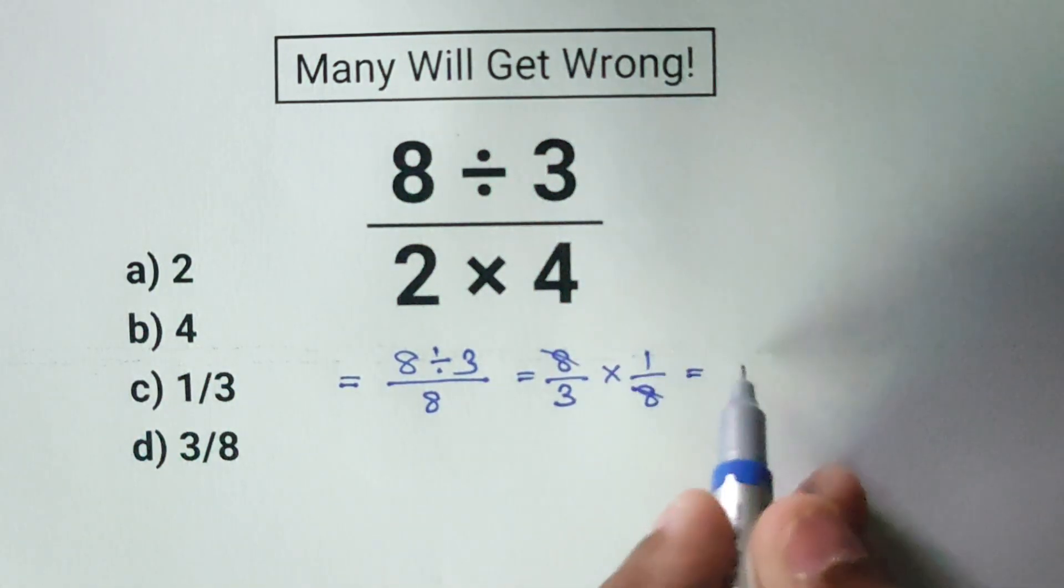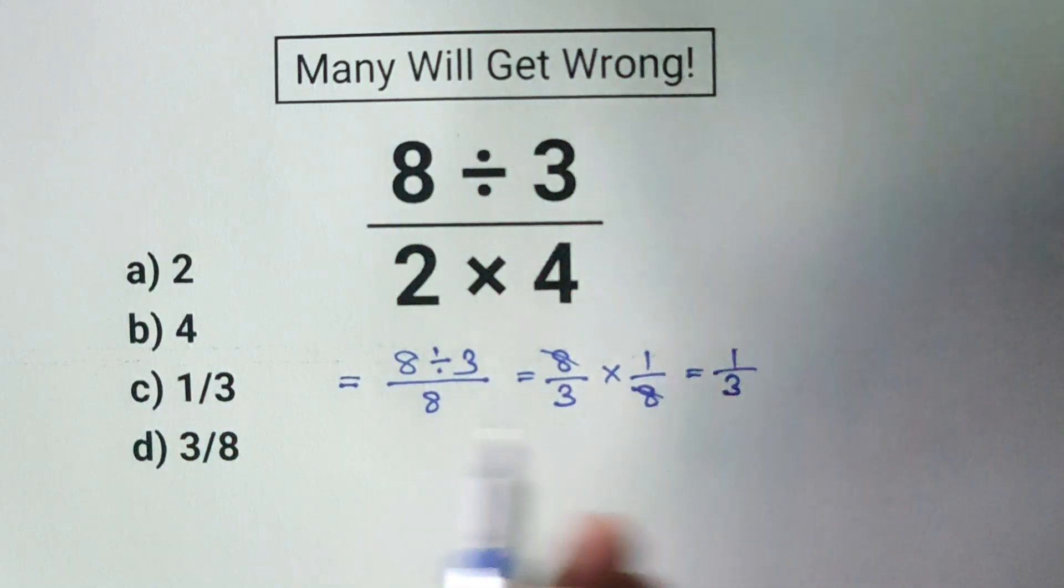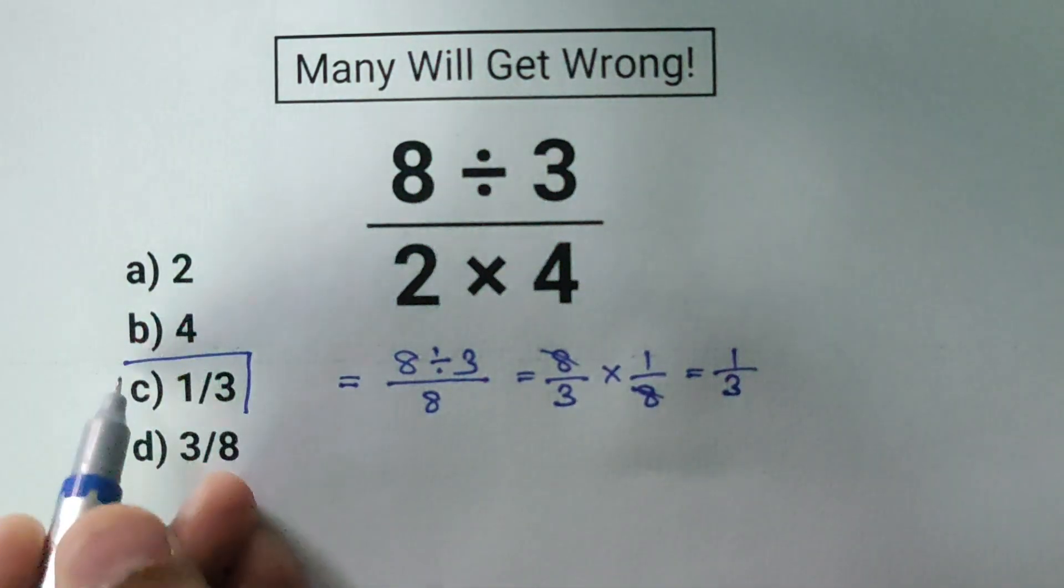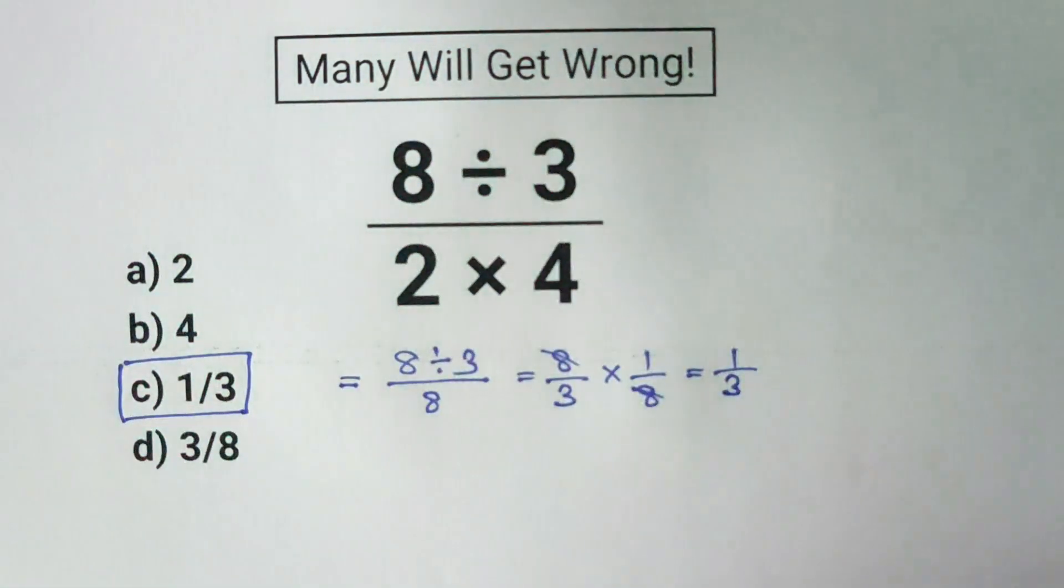That leaves us with 1 over 3. So the correct answer is c) 1 over 3. Did you get the right answer? If you did, awesome job! But if you made a mistake, no worries—now you know exactly how to tackle problems like this.